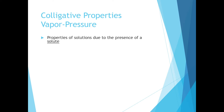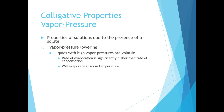The first colligative property we're going to discuss is called vapor pressure. In the case of a solution, the vapor pressure on the surface of the solution is always lower than the vapor pressure of the pure solvent. Liquids that have higher vapor pressures are volatile, which means their rate of evaporation is significantly higher than their rate of condensation. As a result, they will evaporate readily at room temperature.